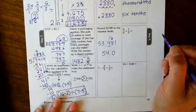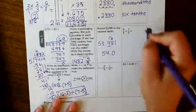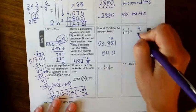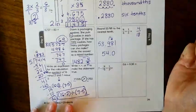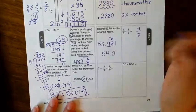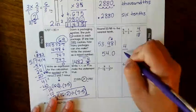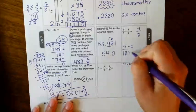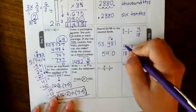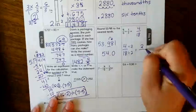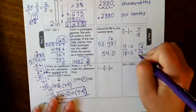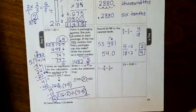Alright, multiplying fractions. You just multiply across. 4 times 1 is 4. 6 times 3 is 18. That can be simplified. What can go into 4 and 18? 2. 4 divided by 2 is 2. 18 divided by 2 is 9. So 2 ninths is your final answer.